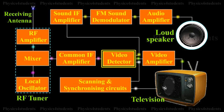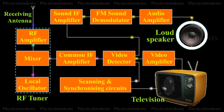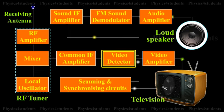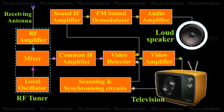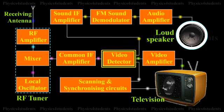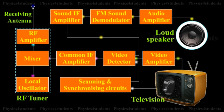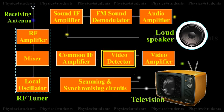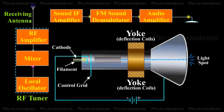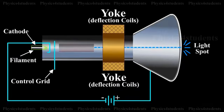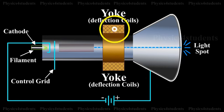The video components are first passed into a detector which separates the picture signal from the synchronizing pulses. The line synchronizing pulses and the frame synchronizing pulses are fed into the horizontal and vertical deflector plates of the picture tube.